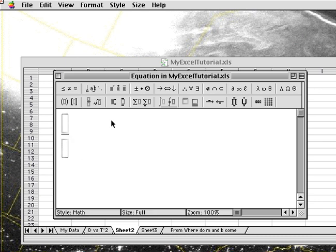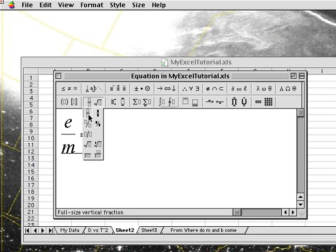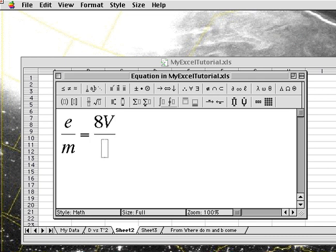So I'm going to start with a fraction and type E and tab and M and hit the right arrow. And say equals. And I want another fraction symbol. 8 times V.